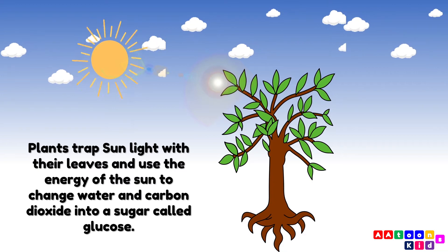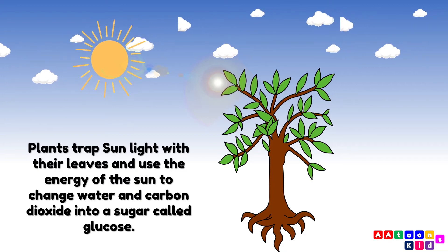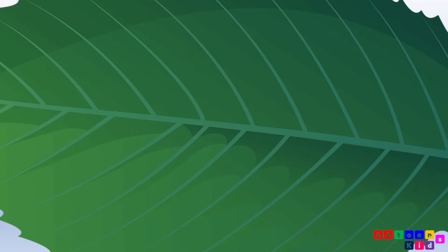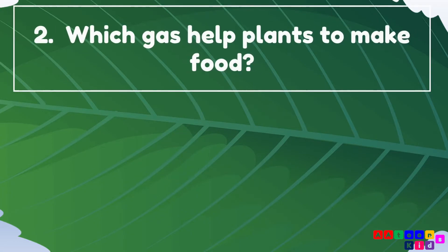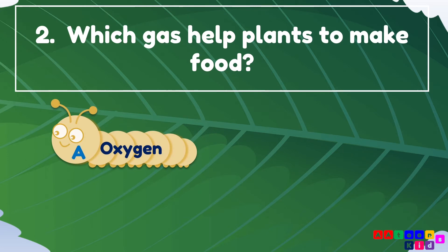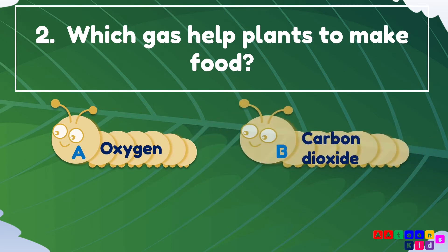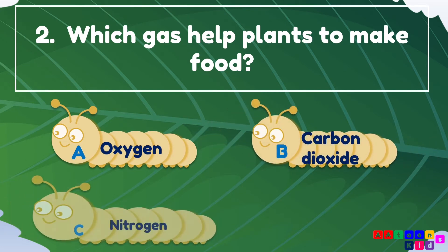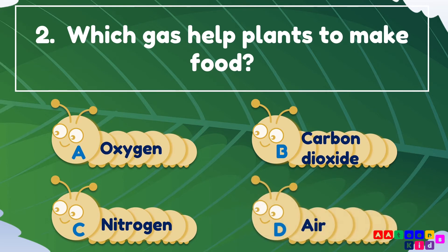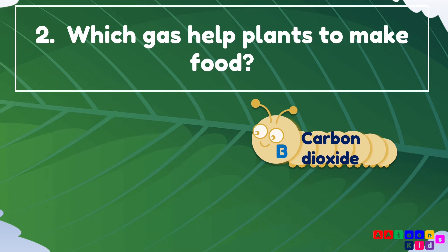Which gas helps to make food? Oxygen, carbon dioxide, nitrogen, or air? Carbon dioxide gas helps plants to make food.